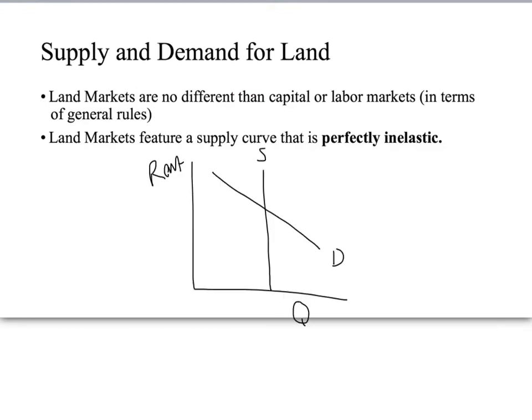Land markets are no different than capital or labor markets in terms of general rules of shifting the curves. But land markets feature a supply curve that is perfectly inelastic. The reason being, if we take all of the United States, there's only a finite supply of farmable or arable land, so there is no change in that. We have X number of million square acres — that's our supply. Demand is still downward sloping.